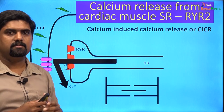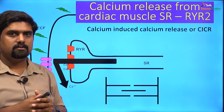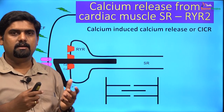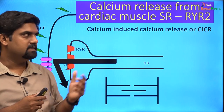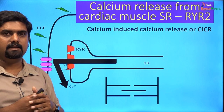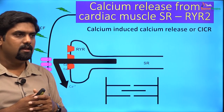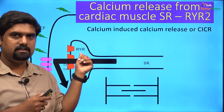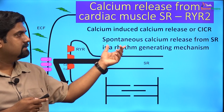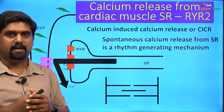In skeletal muscle there is no need for external calcium to enter the cell for contraction, whereas in cardiac muscle calcium must enter from outside to trigger calcium release from the SR. Ryanodine receptors in certain cells, such as SA nodal cells, can also spontaneously release calcium, and this spontaneous release is an important rhythm-generating mechanism.